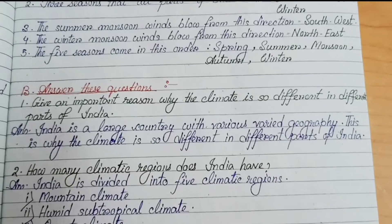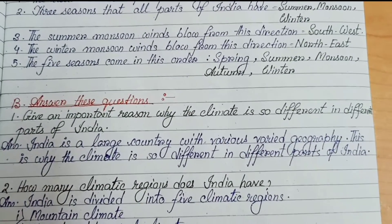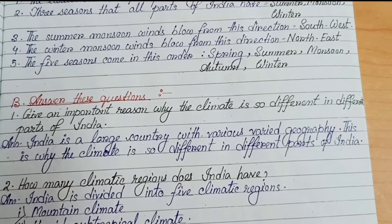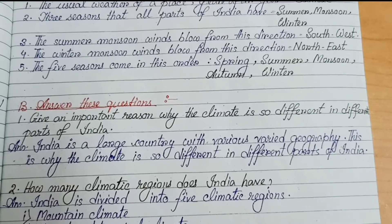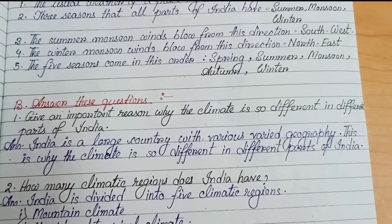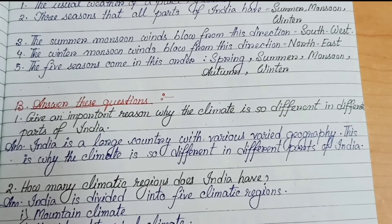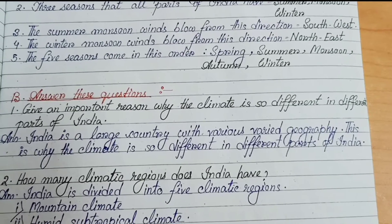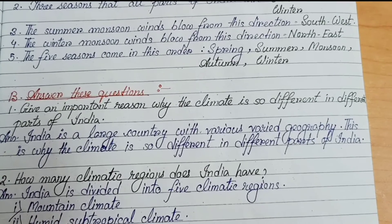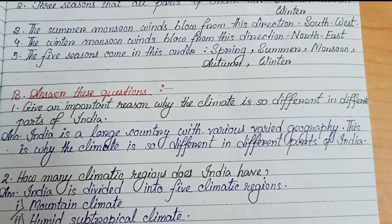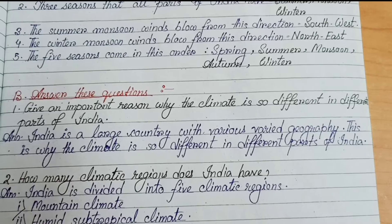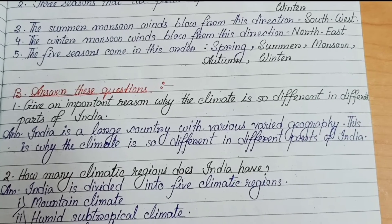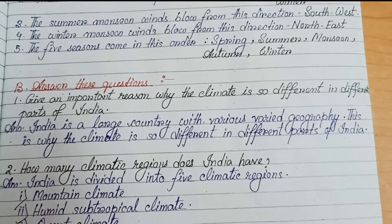Number B, answer these questions. Number 1: give an important reason why the climate is so different in different parts of India. India is a large country with varied geography. This is why the climate is so different in different parts of India.